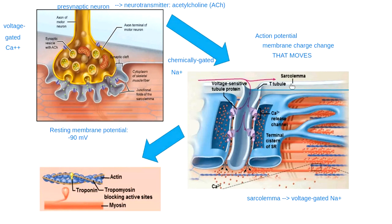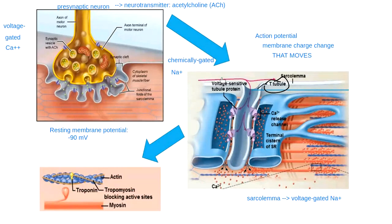Voltage-gated sodium channels are found all across the sarcolemma, depolarizing the membrane everywhere on my muscle fiber — including structures called the T-tubules. T-tubules are places where I folded the sarcolemma inside. This allows my plasma membrane to go all the way down into the very middle of my muscle fiber. T-tubules are covered in voltage-gated sodium channels, and when one part of the membrane freaks out, it allows the next part to freak out too because they're voltage-gated.